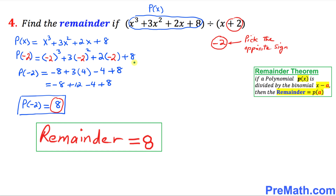Here is the last example, and the good thing is I did it for you. The first step as usual is to call the dividend p(x). On the right-hand side you see the divisor is positive 2, which becomes negative 2 because we take the opposite sign, and then we plug it into p(negative 2) and simplify. So p(negative 2) turns out to be 8, and that is our remainder.